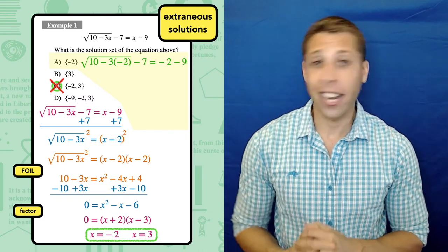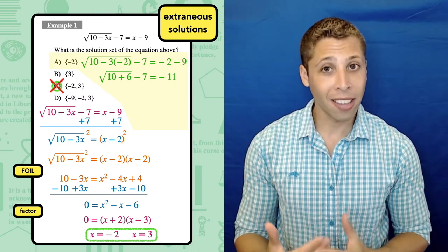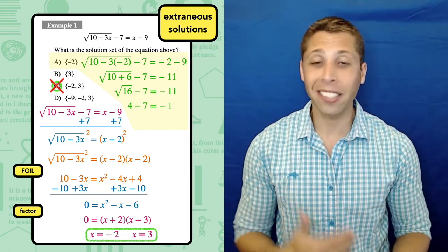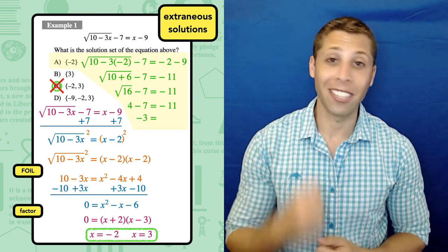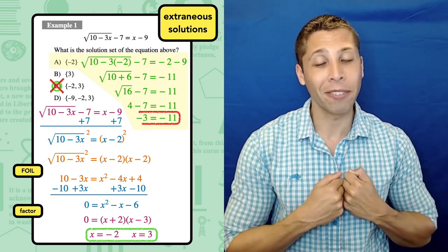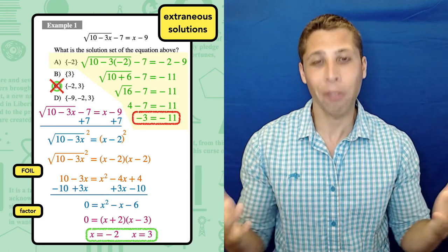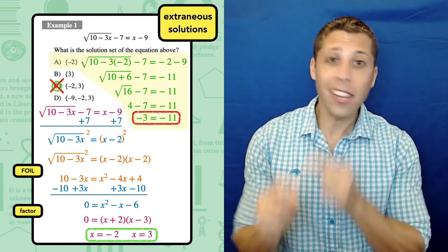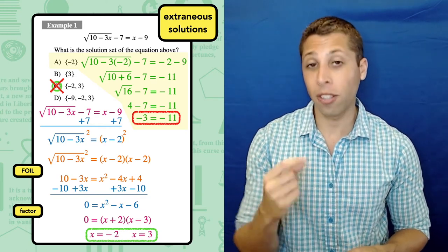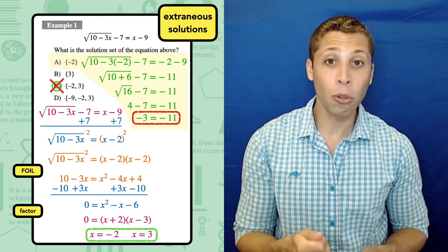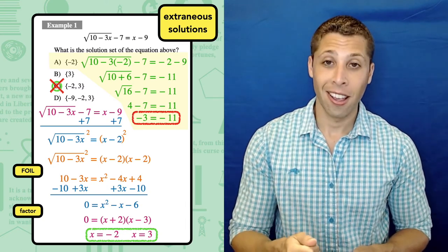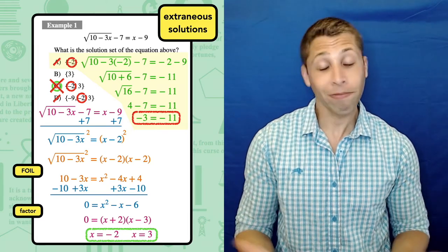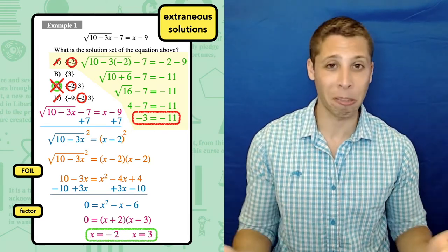Multiply negative 3 and negative 2 to get positive 6. On the right side, negative 2 minus 9 is negative 11. Then we can do 10 plus 6 to get 16. The square root of 16 is 4. And does 4 minus 7 equal negative 11? No. Negative 3 and negative 11 are different numbers. This right here is proof that negative 2 is not a valid solution to this equation. Negative 2 was extraneous. That means that we can cross off every answer choice that contains negative 2. And look, there's only one left. We don't even need to test positive 3. Choice B has to be correct.